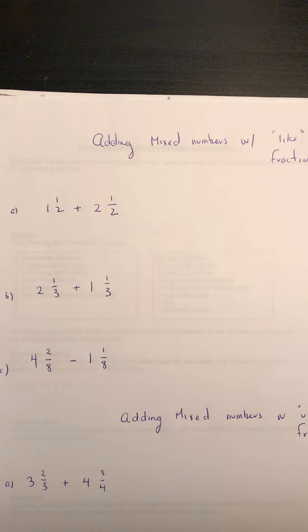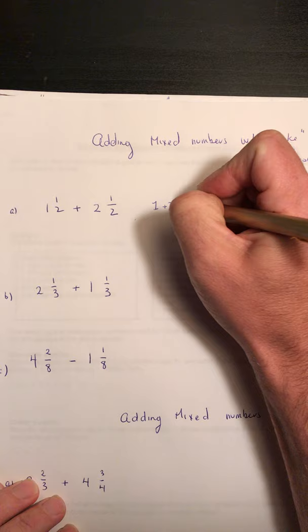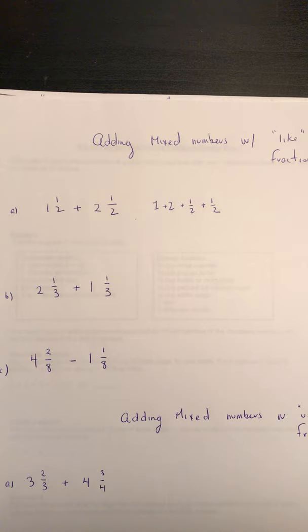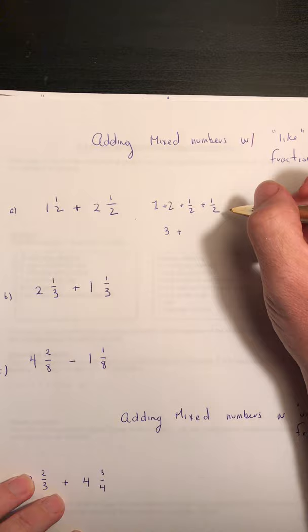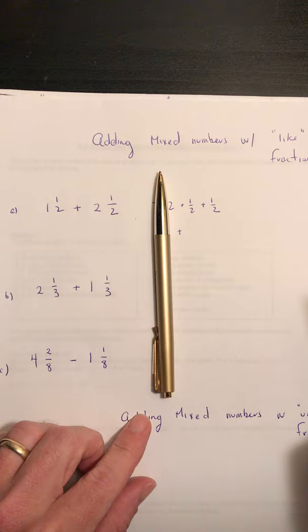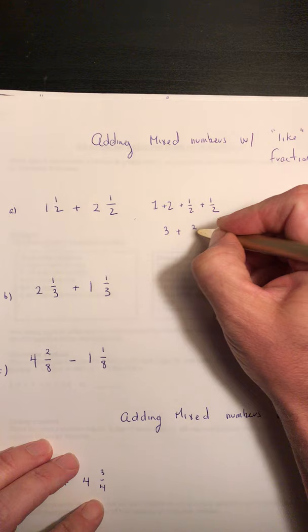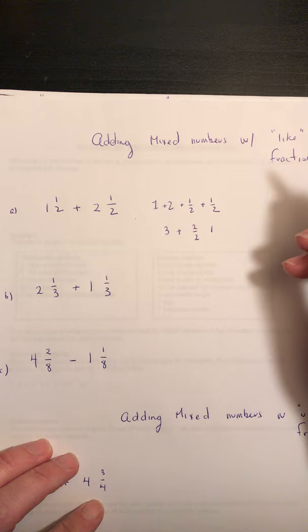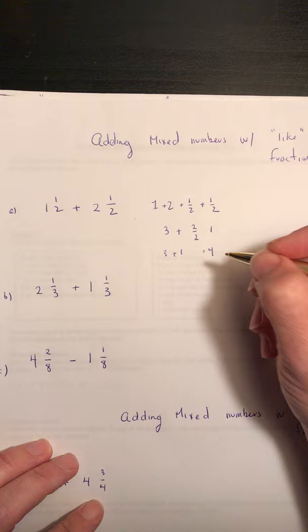Look at this first one right here. We have one and a half plus two and a half. Let's rewrite the question to make it a little bit easier: one plus two plus a half plus a half. One plus two is three, and then one half plus one half — the denominator is the same so we don't change the bottom — one plus one is two over two, which simplifies to one. So the answer is three plus one, which is four.